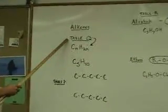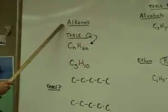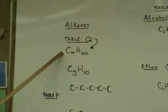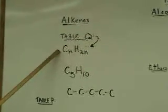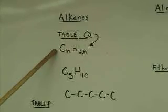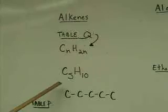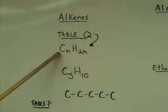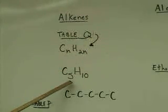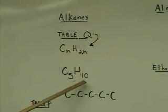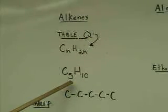On table Q, if we want to talk alkenes, first thing we might notice is that the family formula, sometimes called the homologous series formula, is C to the N, H to the 2N. For example, I would know I had an alkene if it matched that pattern like this does, C5H10, twice as many hydrogens as carbons.